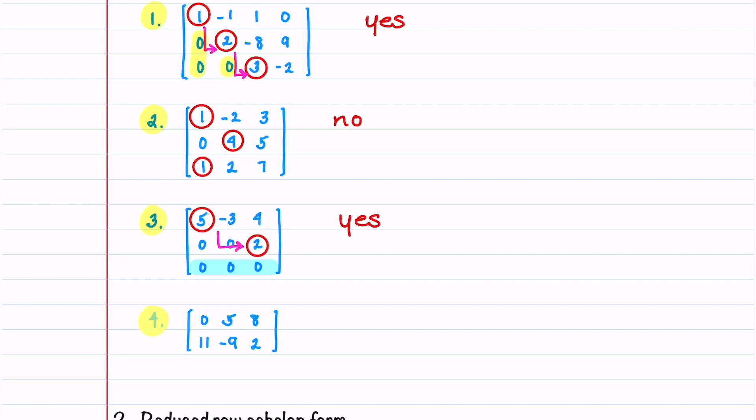Let's now look at our last matrix. We have no rows of zero, so we'll begin by circling the leading entries. You can see that these leading entries are not down and to the right. If we switched rows one and two they would be, but as it's written, this matrix is not in echelon form.